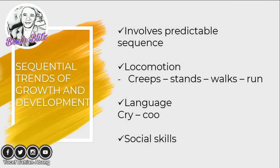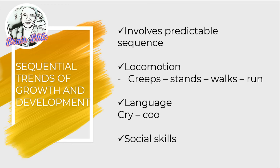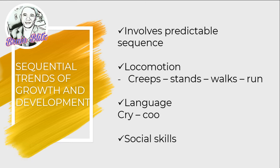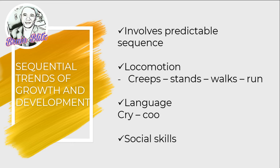Sequential trends of development focus on predictable sequences across three areas. For locomotion: the child learns to creep, then stand, then walk, then run. For language: the child first cries to seek attention, then coos, then verbalizes words. For social skills: the child first develops gross motor skills, which then progresses toward development of fine motor skills.